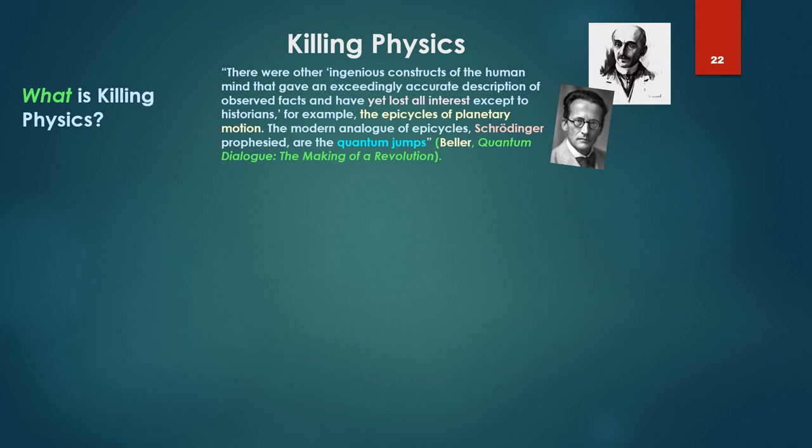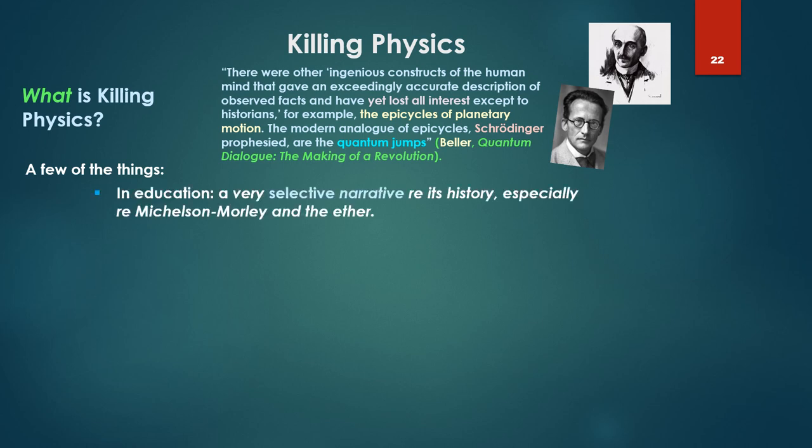So what is killing physics? An interesting quote from Schrodinger: There were other ingenious constructs of the human mind that gave an exceedingly accurate description of observed facts and yet have lost all interest except to historians. For example, the epicycles of planetary motion. The modern analog of epicycles, Schrodinger prophesied, the quantum jumps. Actually from Schrodinger's 1952 paper. So a few things that are killing physics in my humble opinion: Education, a very selective narrative with respect to its history, especially with respect to Michelson-Morley and ether, and all that went on there. In a word, a form of indoctrination into a framework.